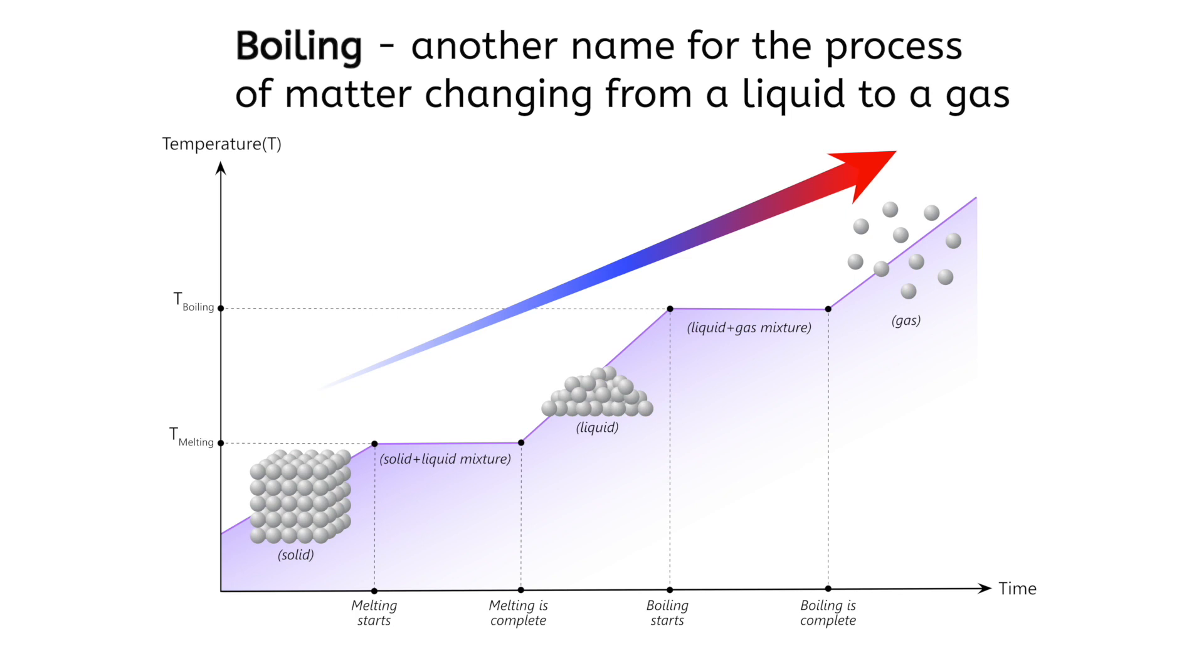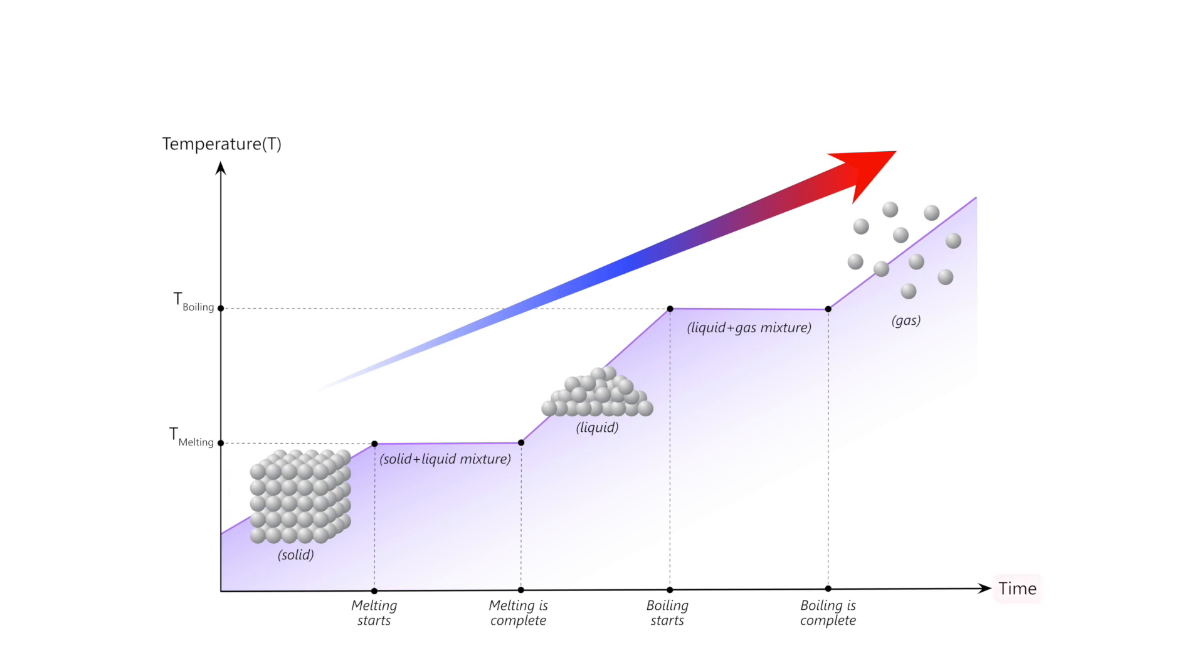Boiling is just another name for evaporation, or when matter changes from a liquid to a gas. The x axis is measuring time. Again, there are no specific times listed, so the axis is just referencing the passage of time, starting with time zero at the origin to the right.